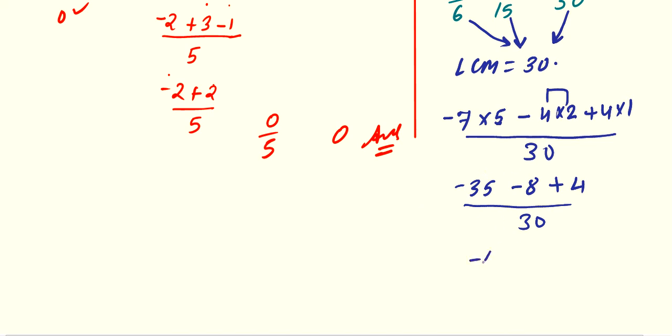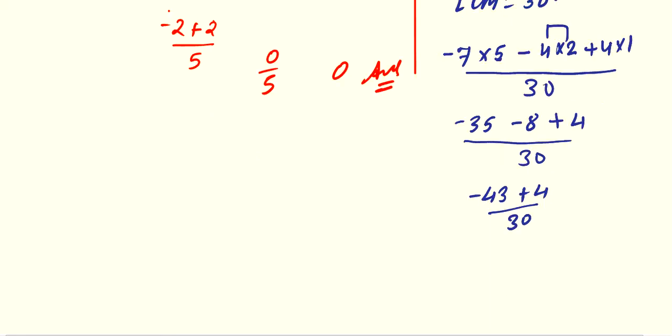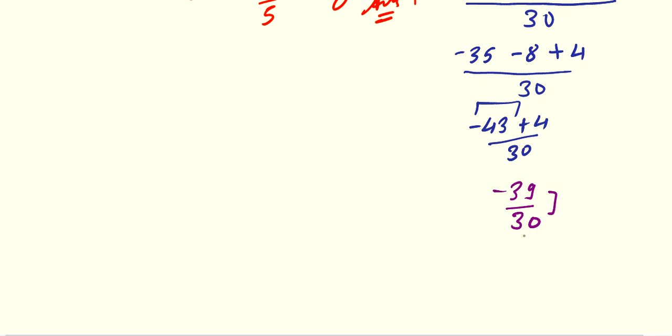So, minus 35 and minus 8, minus 43 plus 4 upon 30. Now, minus and plus minus. But negative sign will be there because 43 is greater. So, minus 43 is greater. Sorry, minus 39 upon 30. Now, these two are multiples of 3. So, you can reduce if you want. Otherwise, let it be. So, 3 into 13, 3 into 10. So, from there we are getting minus 13 by 10. This is your required answer.